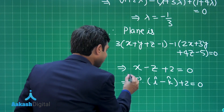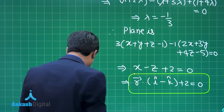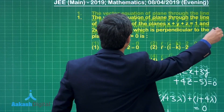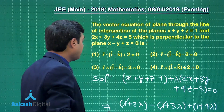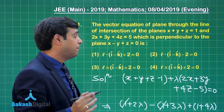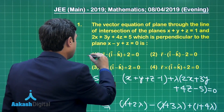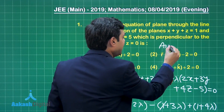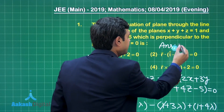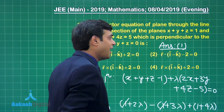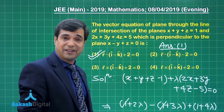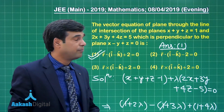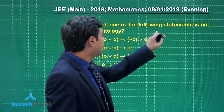Checking from the given options: r dot (i minus k) plus 2 equals 0 — we can see that option number 1 is the correct answer. Let's move on to question number 2: which one of the following statements is NOT a tautology?